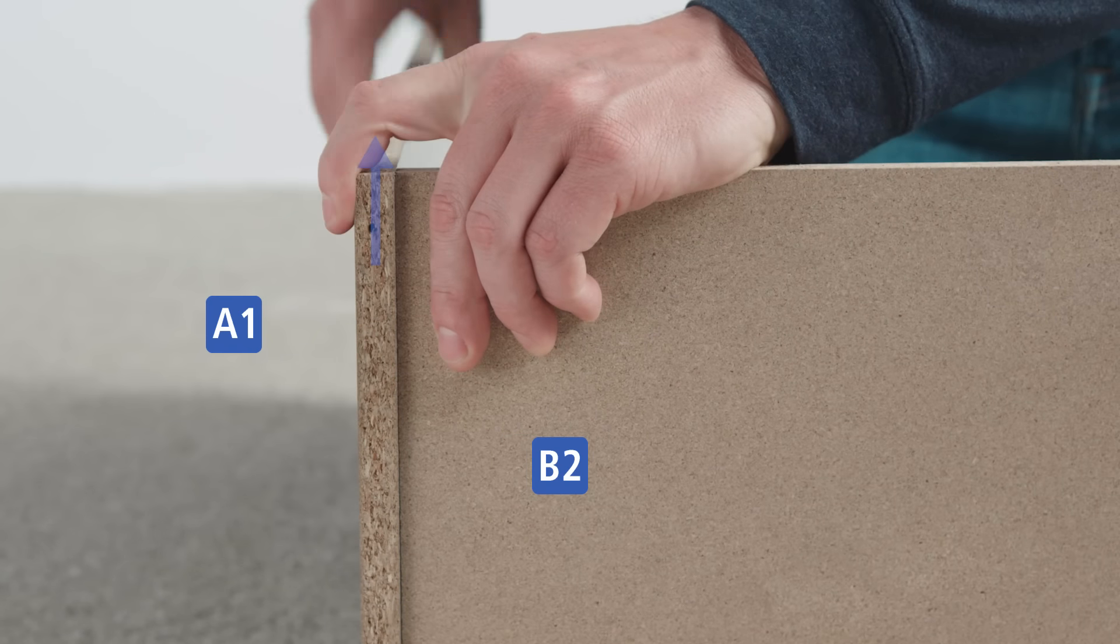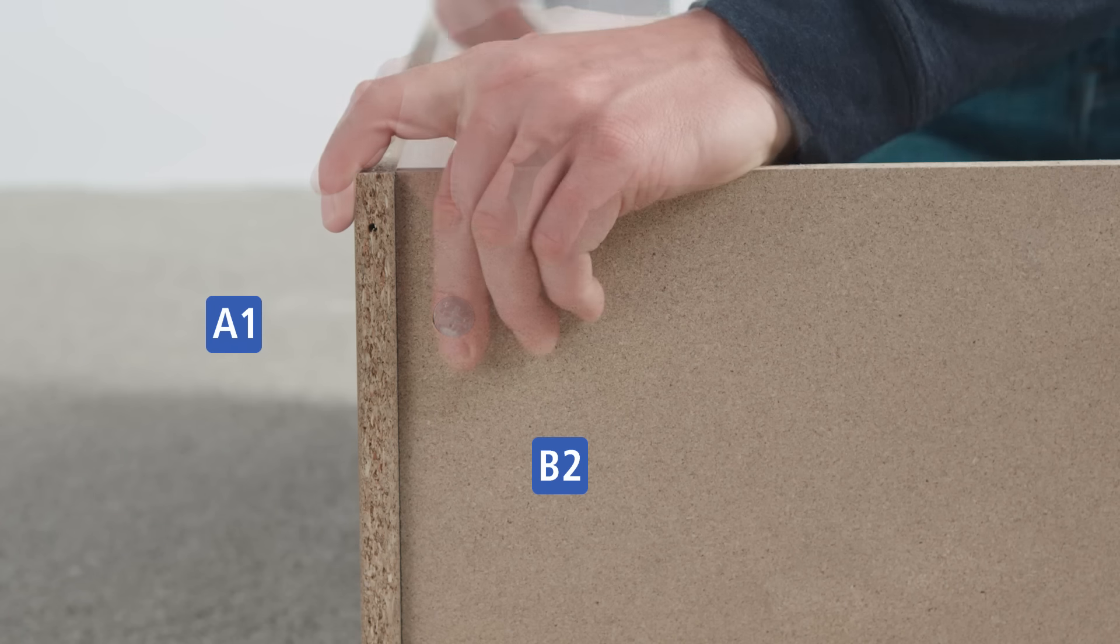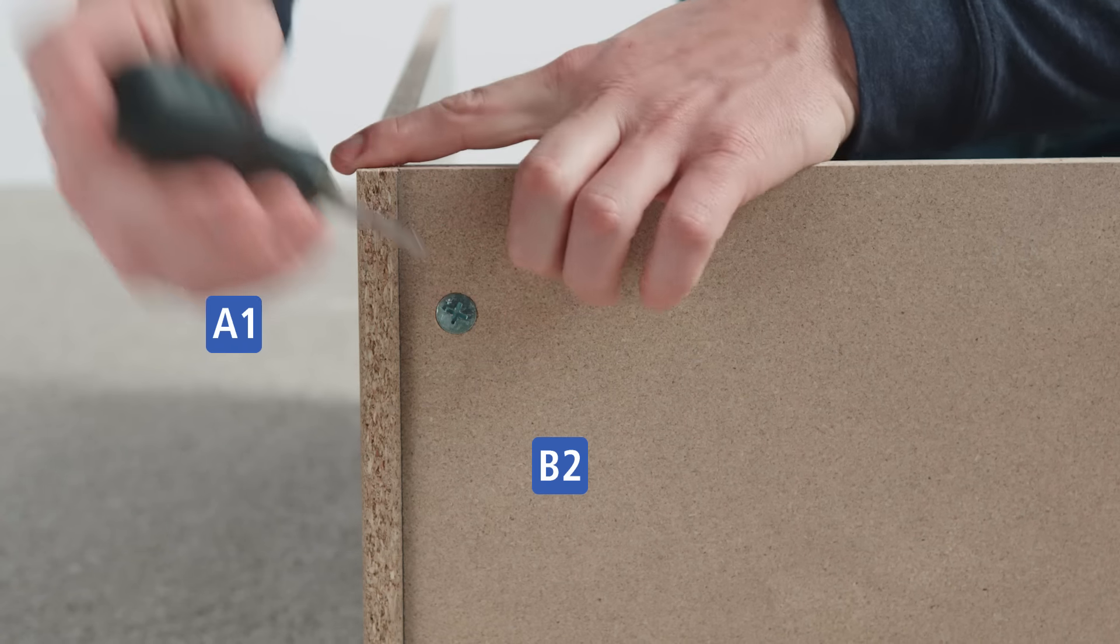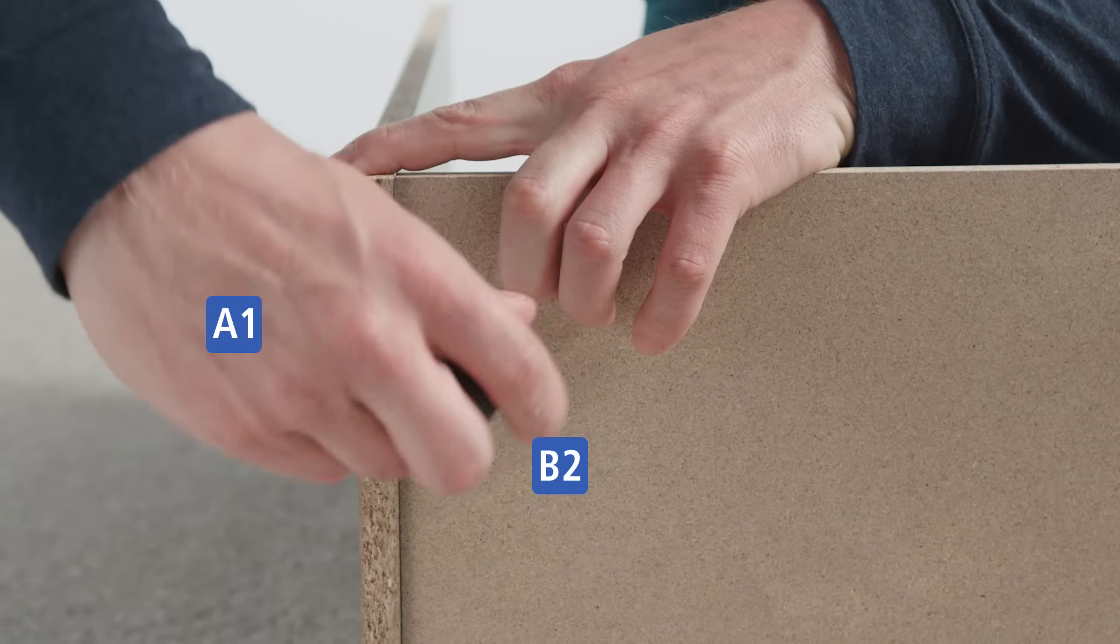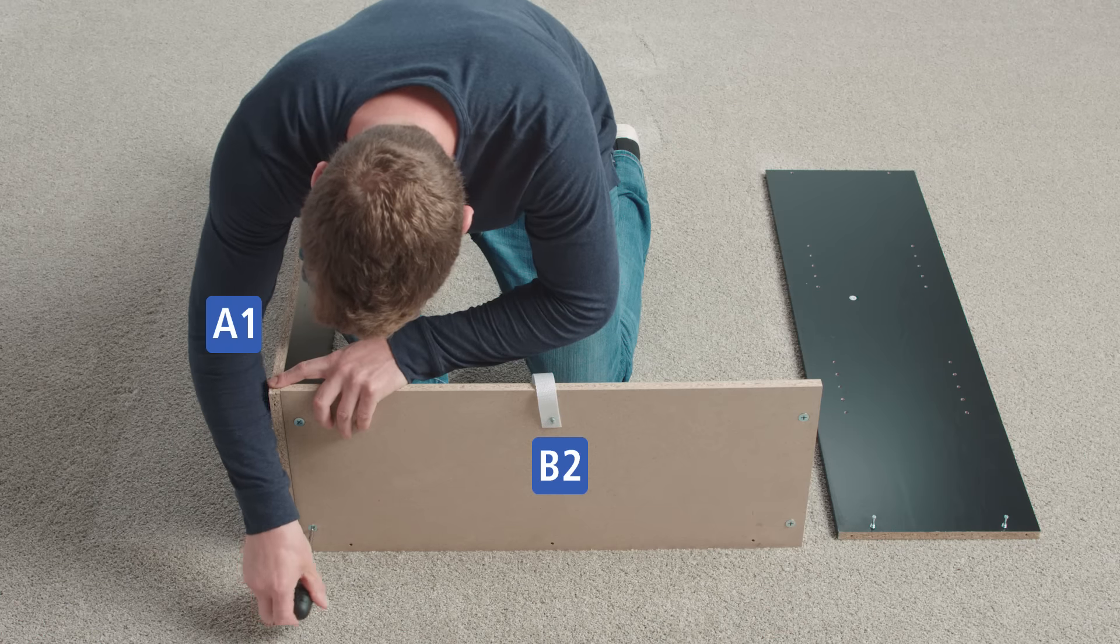Insert the two cam bolts into the holes of B2, which are located underneath the cam locks. Using a screwdriver, turn the cam lock approximately halfway clockwise until you feel resistance. The cam is now locked. Repeat with the other cam lock.